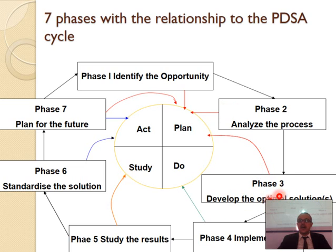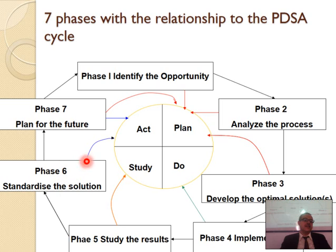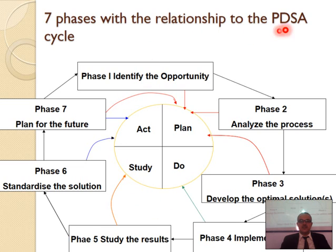Then you start to develop an optimal solution. The best way to improve this might be, for example, having a screen in front of the customer so they can verify the order before it goes, or maybe a receipt that the customer has to receive in order to collect their order. Number four is implementation — you actually do it. Then you study the results: were customers happier, did they get their orders more accurately with less errors and less waste? Then you standardize the solution — once you test it and it works, you standardize it in the acting stage. Then you plan for the future. So these are the seven phases in relationship to PDSA.